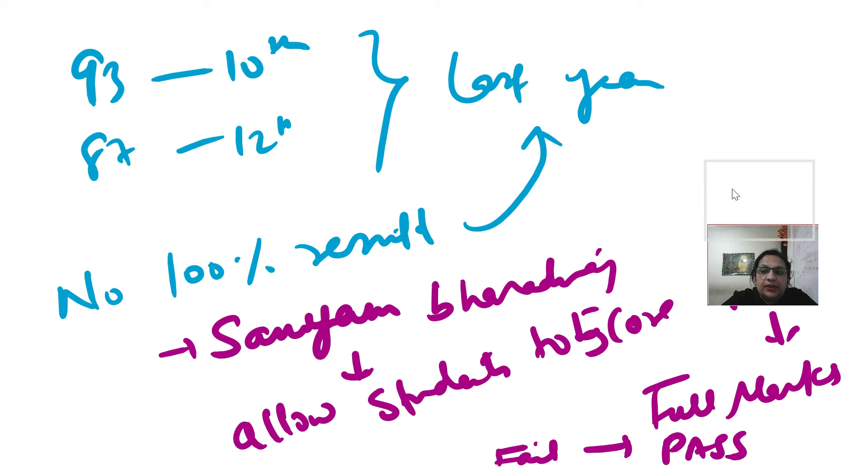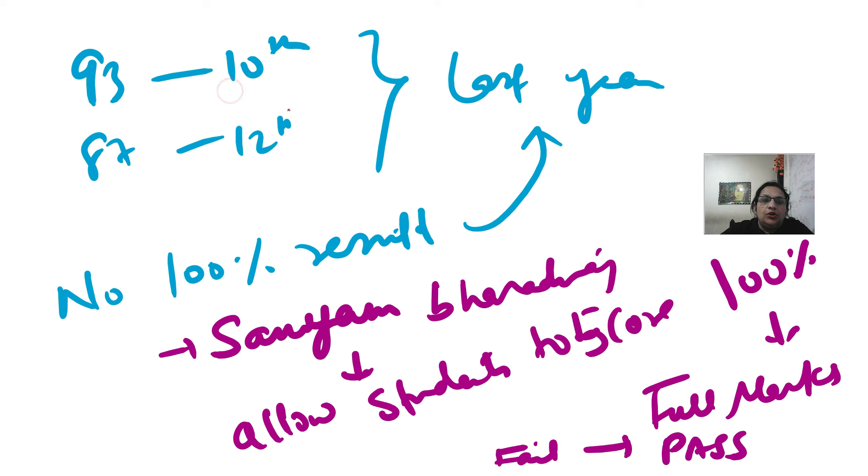Last year the passing percentage was dropped. The 10th was 93, the 12th was 87. This was a 6 percent drop. But this time CBSE has to be better results. So Sanyam Bhardwaj also said that the result should be better and better results.